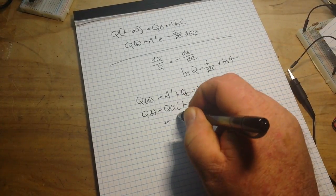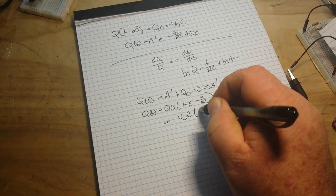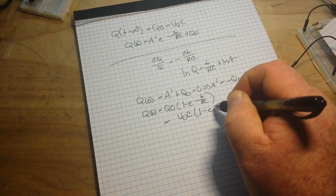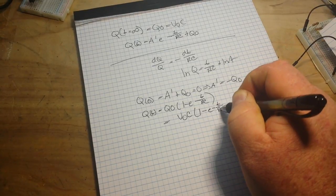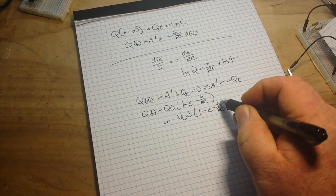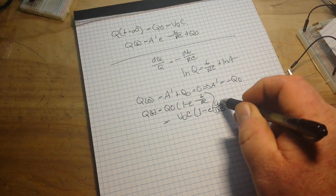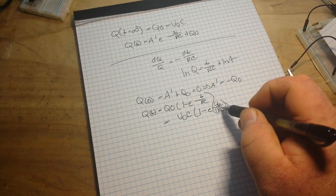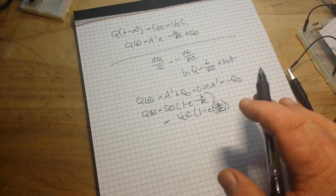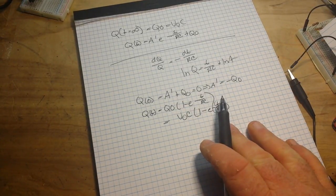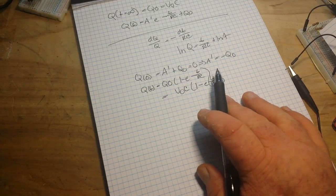And finally, V zero C, one minus E to the minus T over RC. And there you see we have our time and our RC. This is our time constant, which is what we get from the resistor and the capacitor together. Everything else is just charging and discharging. There's nothing magical about it.